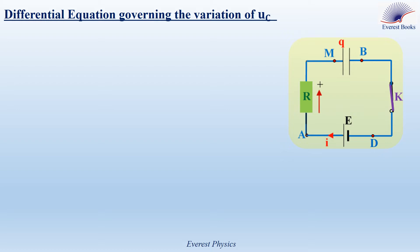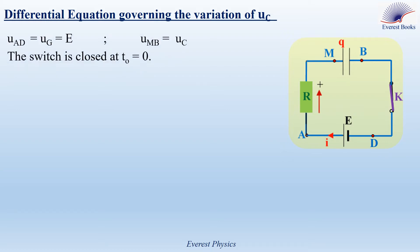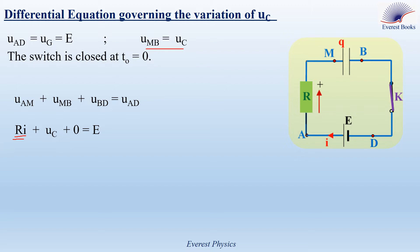Let's determine the differential equation governing the variation of voltage UC across the capacitor. Take UAD as UG equal to E, and take UMB as UC. The switch is closed at time zero. Applying Kirchhoff's voltage law: UAM plus UMB plus UBD equals UAD. UAM equals plus RI, because the positive sense is from A to M through the resistor R. UMB is taken as UC. UBD is the voltage across a closed switch, equal to zero. UAD equals E. We want the differential equation for UC, so we need to replace the current with an expression containing UC.